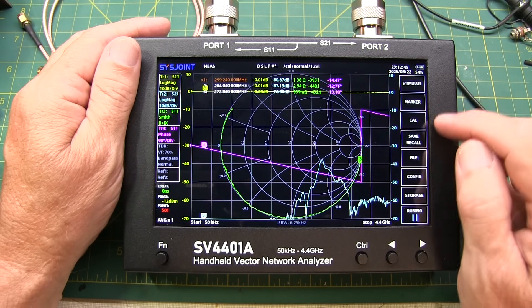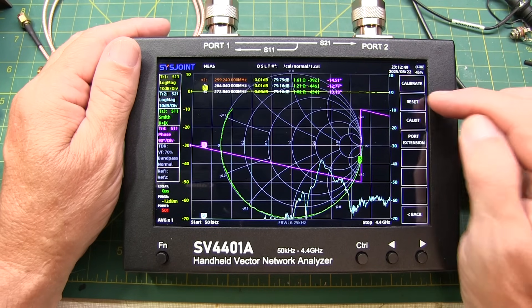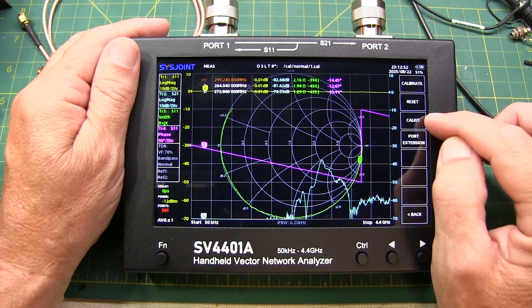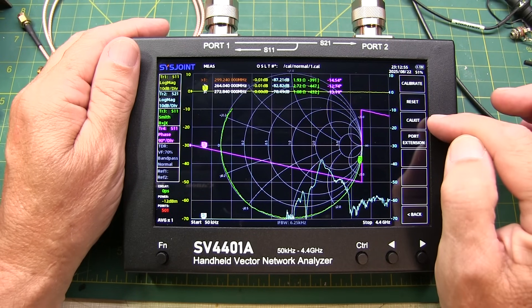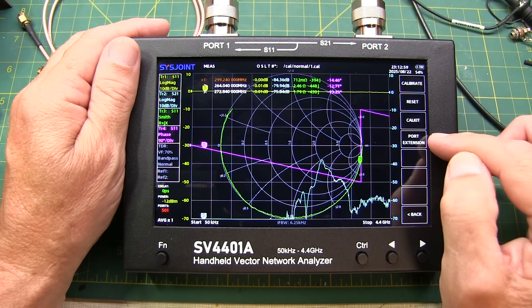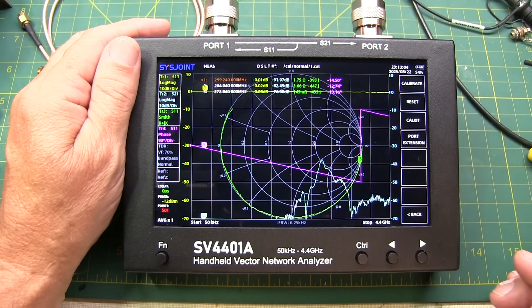Back at the top menu here, the CAL menu allows you to run through a calibration routine, reset it. You can even set the kind of second-order characteristics for high-performance calibration kits here as well, as well as setting port extensions to move the reference plane to your device under test.